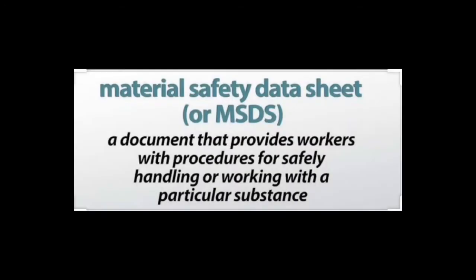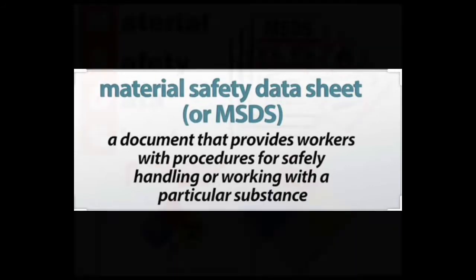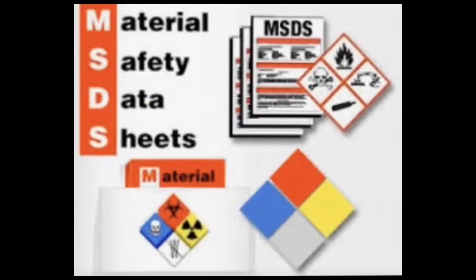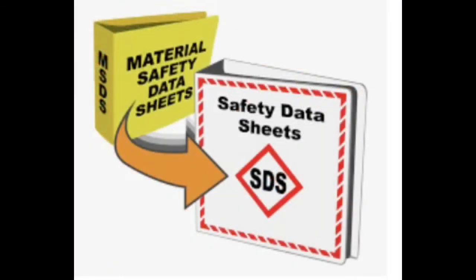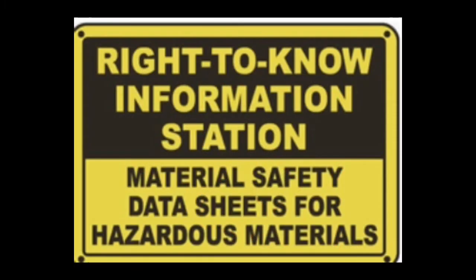MSDS is the abbreviation for a Material Safety Data Sheet. A Material Safety Data Sheet is a document that contains information on the potential health effects of exposure to chemicals or other potentially dangerous substances, and on safe working procedures when handling chemical products. As a CNA, if you experience a chemical spill, you must consult the Material Safety Data Sheet prior to attempting to pick up or clean up the spill.